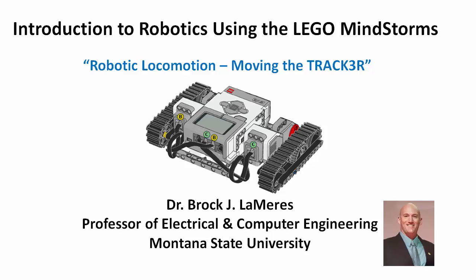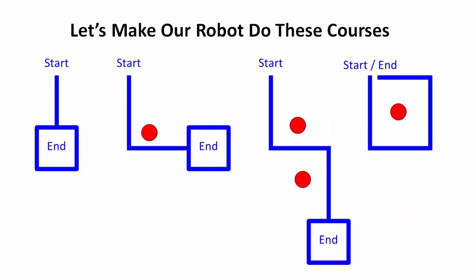Now let's take a look at moving the NX or the tracker. Now that we've studied the theory of DC motors and some of the terminology, we want to look at how we can create a program to perform locomotion using the Mindstorms. One of the first places to start is to give yourself a task — where are we going to move the robot? It's a little bit more fun to actually give yourself something to do.